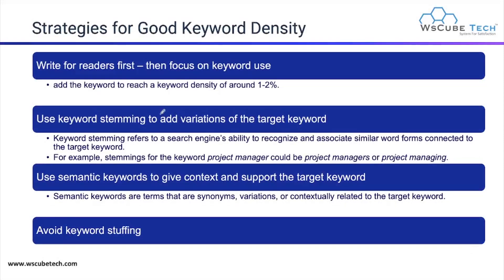For good keyword density, the first strategy is to write for the readers first, then focus on the keywords. First focus on what information your readers want to get, then add your keyword to reach a keyword density of around 1 to 2% only. Also, use keyword stemming to add variations of the targeted keyword.